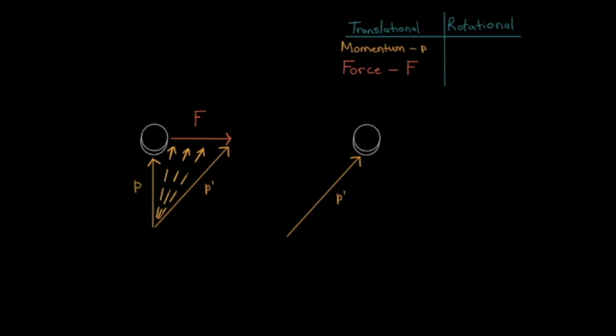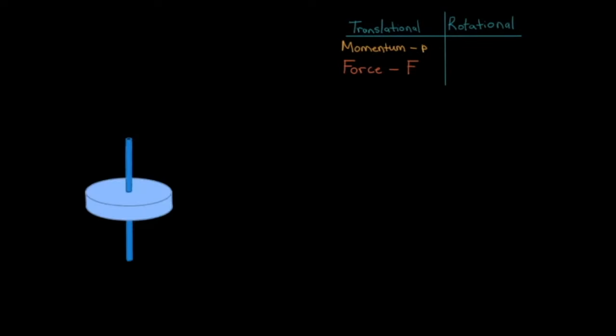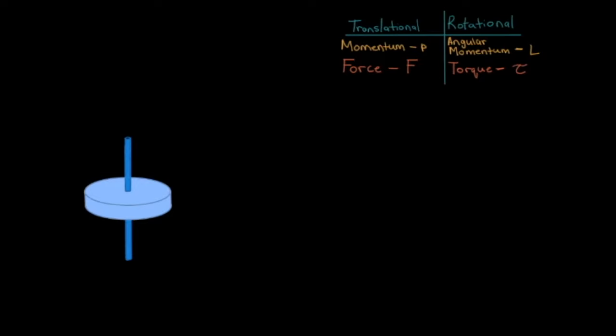Now what does this have to do with our spinning wheel? Well, when a wheel spins it has momentum as well — specifically angular momentum, and we denote this with a capital L. And just like regular momentum, angular momentum will change based on a force applied to it — more accurately, it'll change based on a torque applied to it. We denote torque with the symbol tau. Now what's the direction of this angular momentum that we speak of?